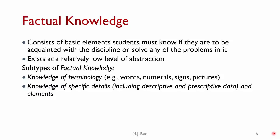The subtypes of factual knowledge include: knowledge of terminology — that is, specific words, numerals, signs, symbols, and pictorial representations used in a given discipline — and knowledge of specific details including descriptive and prescriptive data. Descriptive means stating what something is, like the density of a material. Prescriptive data means stating what it should be. Both belong to the category of factual knowledge.